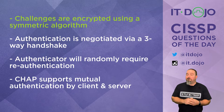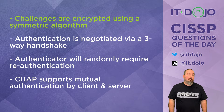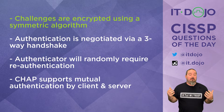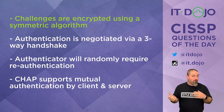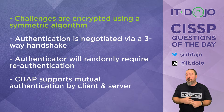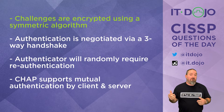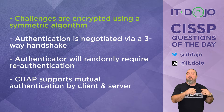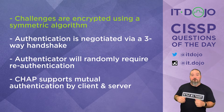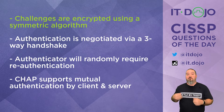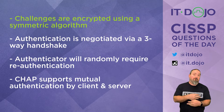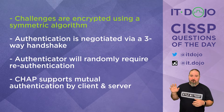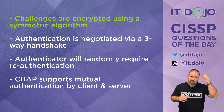The last answer choice says CHAP supports mutual authentication by both client and server, and this is definitely a true statement. If you were to watch this exchange, you'd see a challenge and response going in one direction and then simultaneously in the other direction as well. So I'm sending you a challenge, you're sending me a challenge, we both figure out the response, and we both accept or reject based on that.